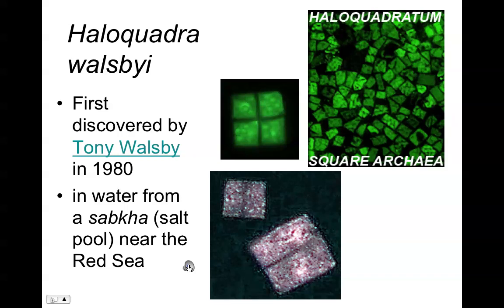Haloquadra walsby is an example of rectangular or square-shaped prokaryotic cells. They were initially discovered in very salty pools near the Red Sea in 1980 by Tony Walsby, hence the species name. These are actually flat, square, or rectangular-shaped prokaryotic organisms. The 'halo' as part of the name tells you this is a salt-loving organism.